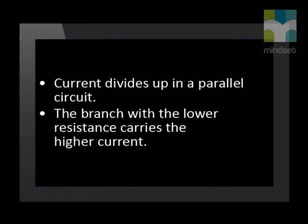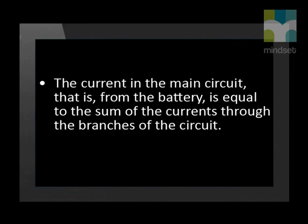Now what can we learn from these results? Current divides up in a parallel circuit. The branch with a lower resistance carries the higher current. And the current in the main circuit, that is from the battery, is equal to the sum of the currents through the branches of the circuit.